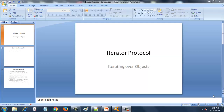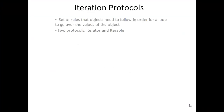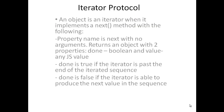Hello and welcome. Next we are going to see the iterator protocol. What is it all about? It is all about iterating over objects. So iteration protocols — what are those set of rules that objects need to follow in order for a loop to go over the values of the objects? There are two protocols: iterator and iterable.